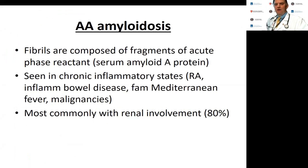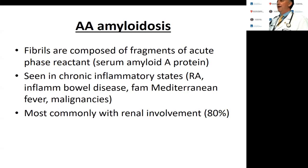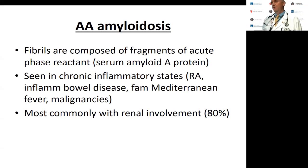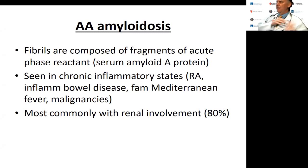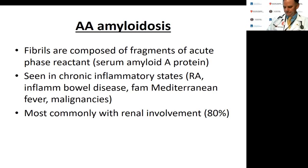The AA type fibrils are composed of acute phase reactant — the amyloid A protein — and you see these in any chronic inflammatory state: classically rheumatoid arthritis, inflammatory bowel disease, Mediterranean fever, and certain cancers. For reasons that aren't clear, this amyloid protein tends to accumulate in the glomeruli or kidneys, as opposed to the heart.